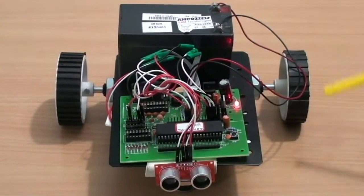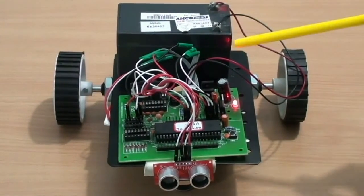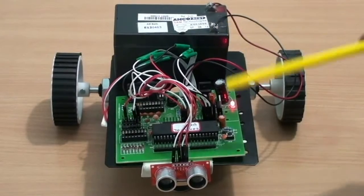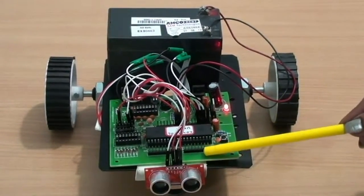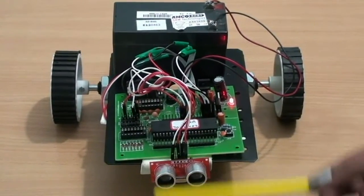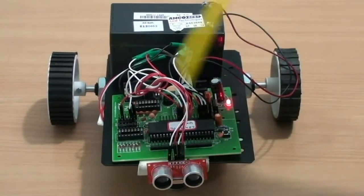This project is an ultrasonic-based obstacle avoidance robot. This is nothing but a robot which moves independently and automatically senses the presence of an obstacle in its path and deviates its path or stops its journey.